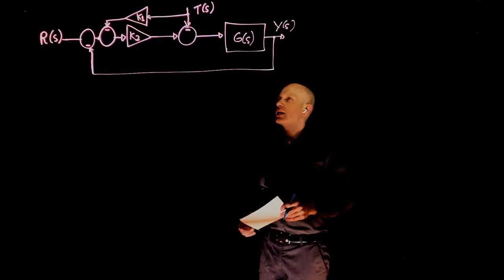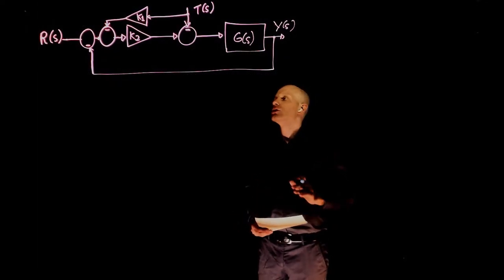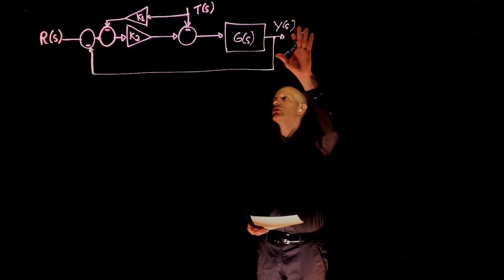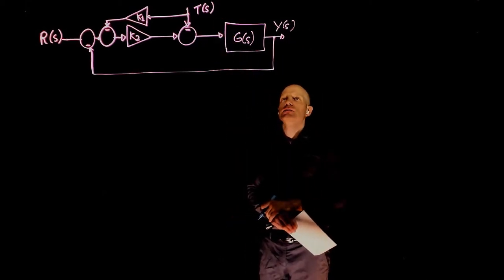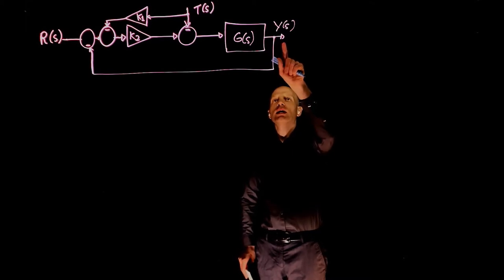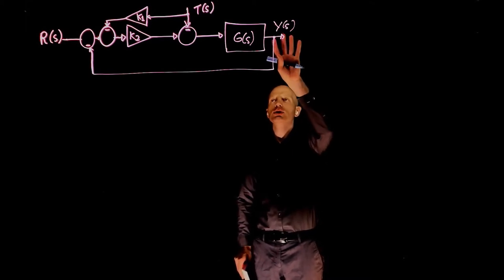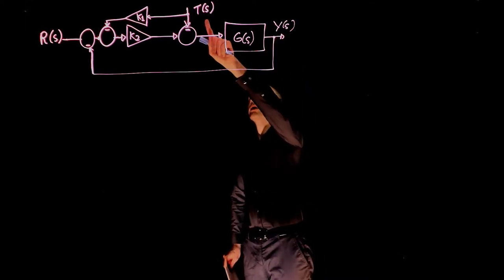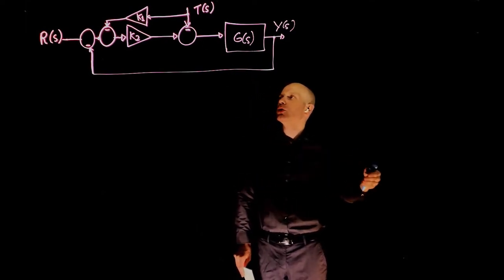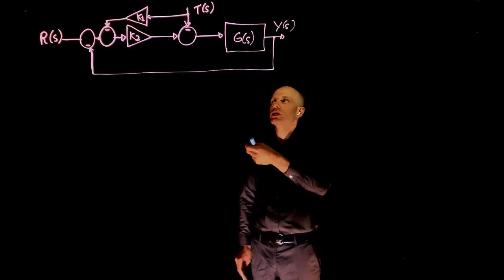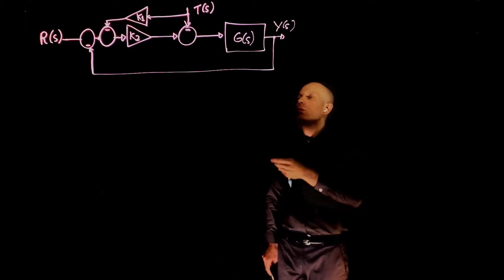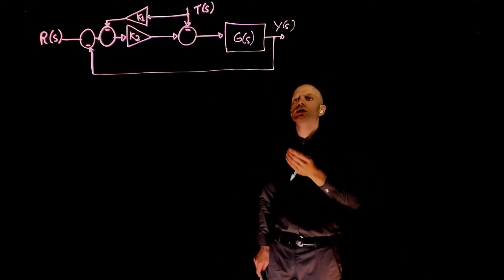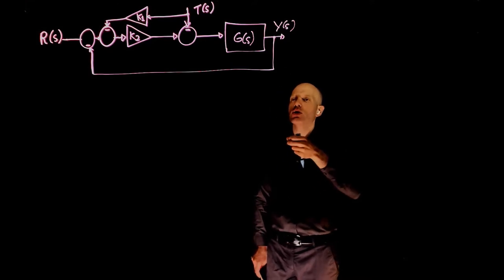This block diagram represents an active suspension system that is supposed to control the position of the wheel given the road conditions T. We are looking at maintaining a certain position for the wheel provided that we know the bumps in the road that are measured using a sensor and that measurement is T. We want to tune this control system so that the position of the wheel here is always zero.